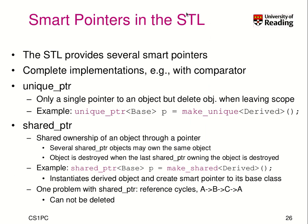This pattern is so common and widely used that you find it in the C++ Standard Template Library, which provides several smart pointers for different purposes with complete implementations. There is a unique_ptr — only a single pointer to an object is allowed, but it ensures when you leave the scope the object is automatically removed. You use it like: unique_ptr of some class, and you call make_unique, which can take a derived class or anything.